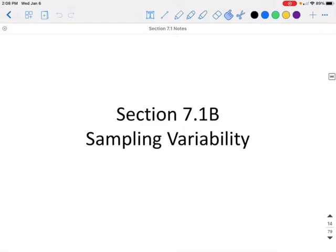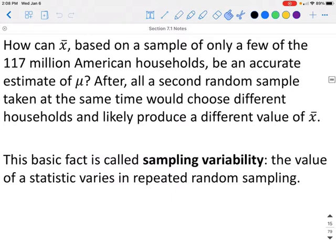This is section 7.1 part B, sampling variability. How can X̄, based on a sample of only a few of the 117 million American households, be an accurate estimate of μ, which is the mean for the entire population? After all, a second random sample taken at the same time would choose different households and likely produce a different value of X̄.